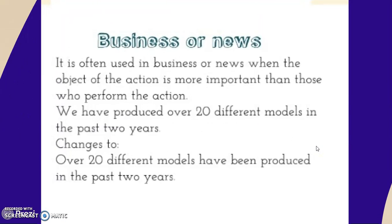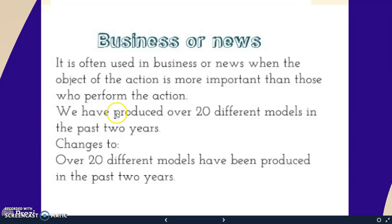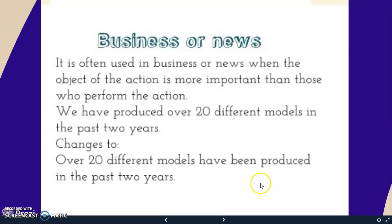We also use the passive when we're speaking about business, because in business, the result of our actions is more important. So, instead of saying something like, 'We have produced over 20 different models in the past two years' — that puts the focus on 'we' — we would rather say, 'Over 20 different models have been produced in the past two years.' This way, we give importance to the process of producing the models, and not the company.